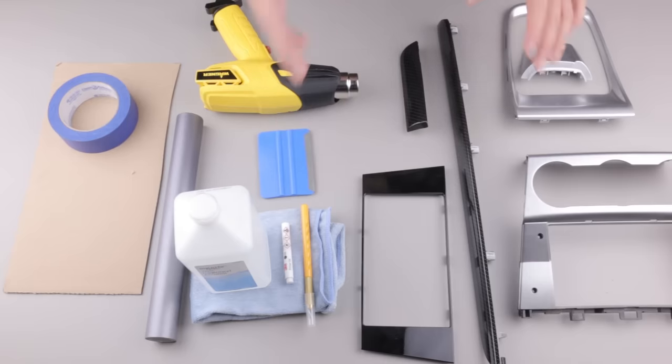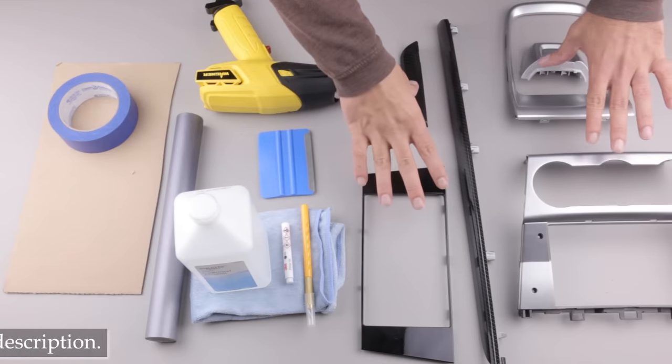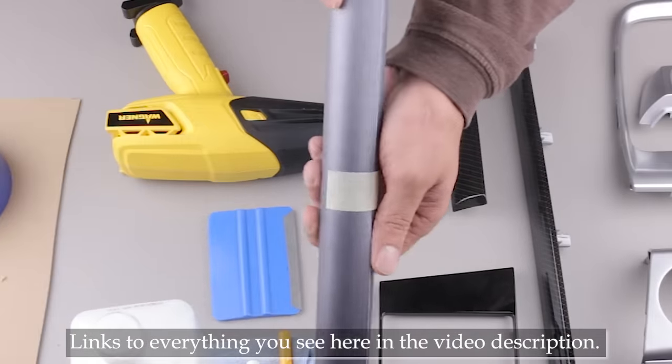Here you can see everything we're going to need to get this job done. These are all the trim pieces that I'm going to be wrapping and I'm going to be wrapping them with this brushed steel vinyl.